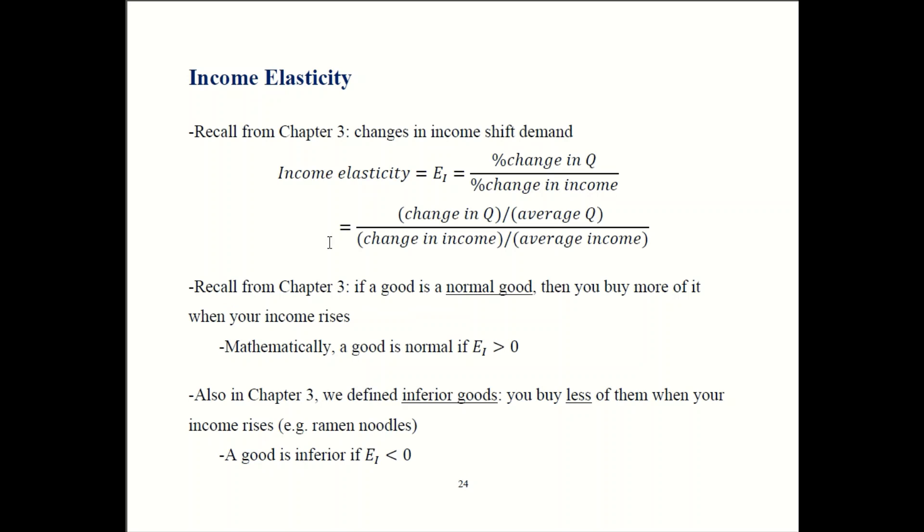So in Chapter 3 we talked about how income can shift demand. It depends upon whether the good is a normal good or an inferior good. For normal goods, you buy more of them when your income goes up. So that means that if a change in income is positive, then change in Q should also be positive. A positive over a positive is going to be positive. So EI should be greater than zero. EI should be positive if we're looking at normal goods. Most goods out there we said were normal goods, hence the name normal.